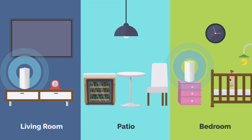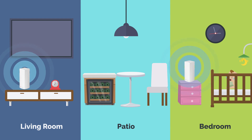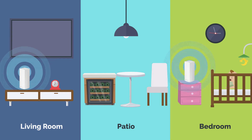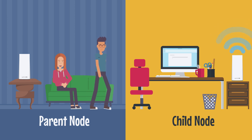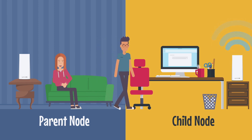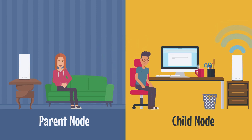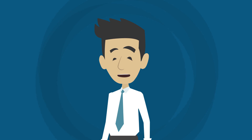Nodes placed improperly or too far apart can cause weaker signals. Make sure all nodes are placed out in the open where signals can travel, versus inside a cabinet or behind furniture. If your signal is fair or poor, consider relocating or moving your child node closer to another node, then recheck your signal. Achieving a good signal strength is a good place to start optimizing your network, but don't forget to also consider the number of devices and bandwidth your network uses.